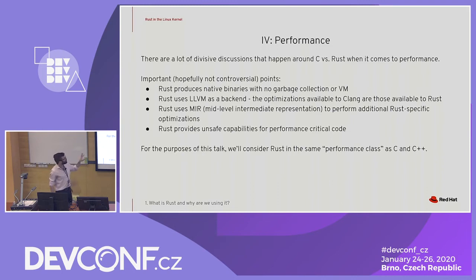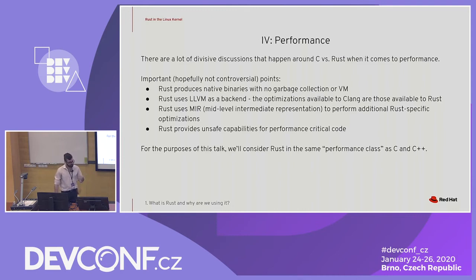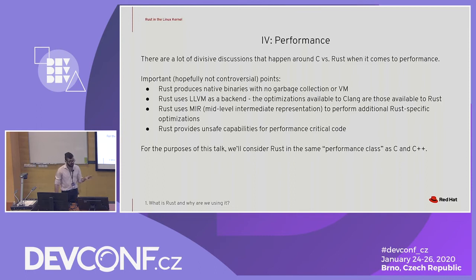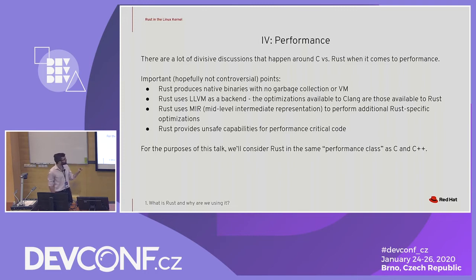When it comes to performance, people always want to know which is faster, C or Rust. I'm going to sidestep all of that and go over some non-controversial points. Rust produces native binaries — there is no garbage collection or VMs, so we get some performance boost from that. Rust uses LLVM as a backend, so anything that Clang has in terms of optimizations is also available to Rust.